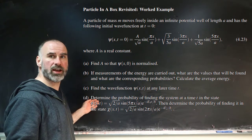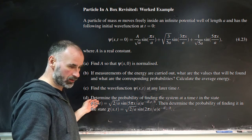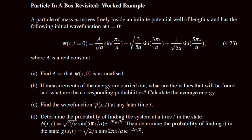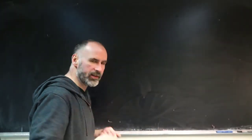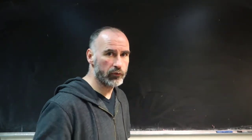It's on page 67 of the notes in section 4.3. A particle of mass m moves freely inside an infinite potential well of length a and has the following initial wave function at t equal to zero, given by that, where a is a real constant. First of all, it says find a so that psi(x,0) is normalized. What we need to recognize is that that's a superposition — it's a linear combination of the basis states.